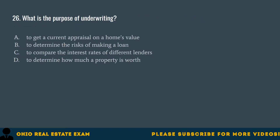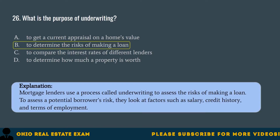Question 26. What is the purpose of underwriting? A. To get a current appraisal on a home's value. B. To determine the risks of making a loan. C. To compare the interest rates of different lenders. D. To determine how much a property is worth. The correct answer is B. To determine the risks of making a loan. Mortgage lenders use a process called underwriting to assess the risks of making a loan. To assess a potential borrower's risk, they look at factors such as salary, credit history, and terms of employment.